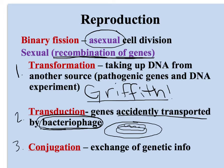So conjugation — this is an exchange of genetic information. In class, I had two people come up and they held hands, and that was their sex pilus, and they moved the little stuffed animals, which were their packages of genetic information. They exchanged those across their sex pilus.